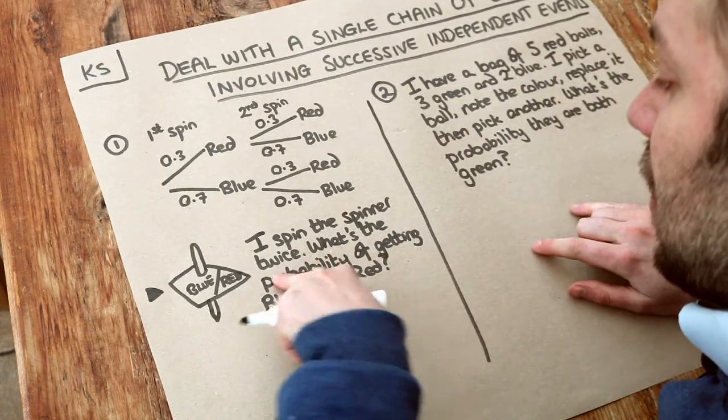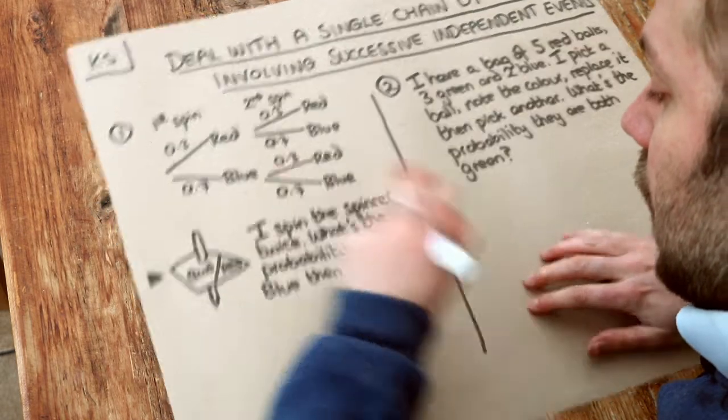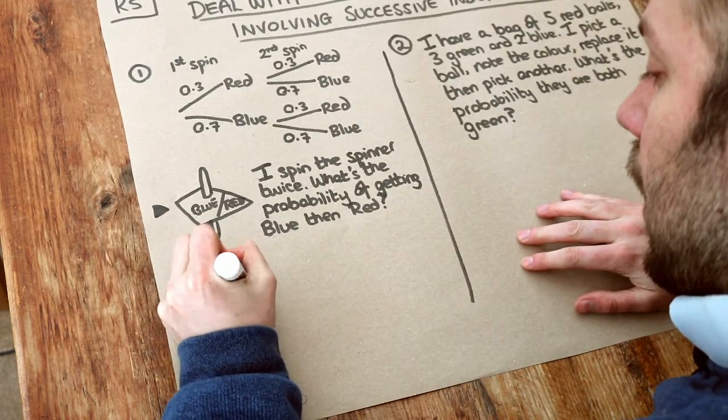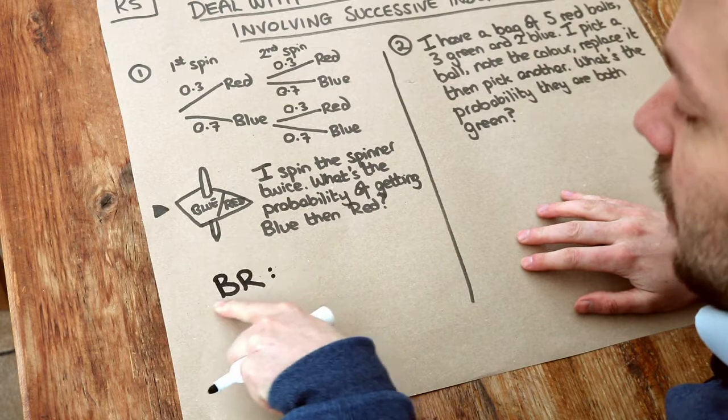Now it says I spin the spinner twice. What's the probability of getting blue, then red? So blue and then red. I like to write out the sequence of outcomes.